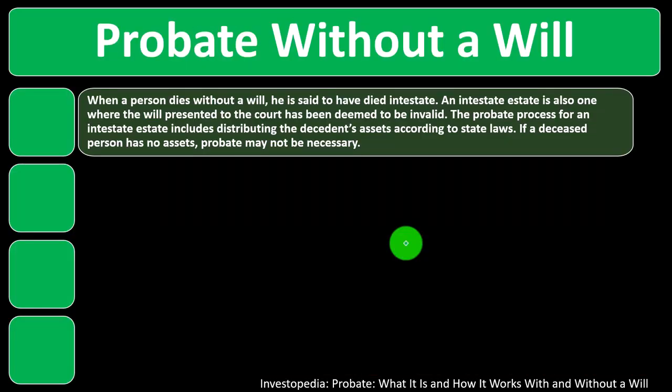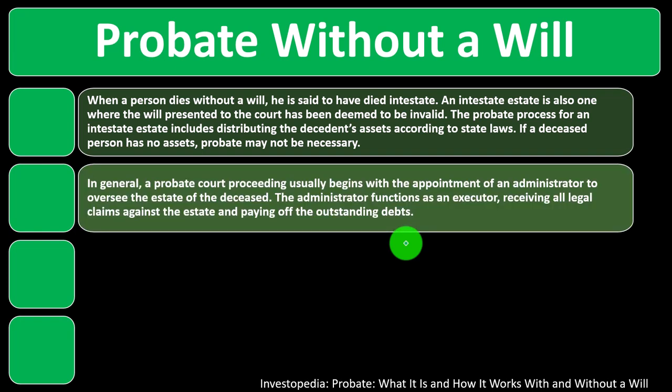Probate without a will: When a person dies without a will, they are said to have died intestate. An intestate estate is also one where the will presented to the court has been deemed invalid. The probate process for an intestate estate includes distributing the decedent's assets according to state law — you fall back on state law as the default for the distribution process. If a deceased person has no assets, probate may not be necessary, as there is less of an administration problem to manage.